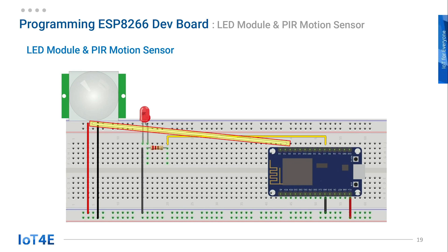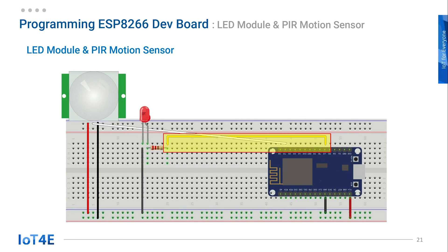The center wire of the motion sensor is the data wire; it is connected to the D1 GPIO pin of the ESP8266. For the LED module, the positive of the LED, indicated by its long leg, is connected to a 220 ohm resistor, and the resistor is connected to the D7 GPIO pin of the ESP8266. The negative of the LED module is connected to the negative of the breadboard.